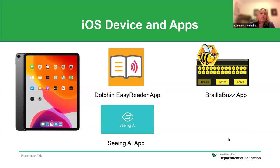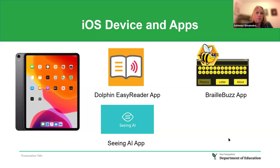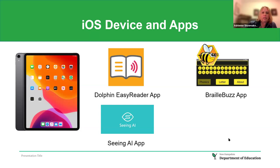iOS devices and apps are frequently used with our students. A few helpful apps: the Dolphin Easy Reader app for reading and accessing Bookshare books; the Braille Buzz app, available through APH; and the Seeing AI app, which can read short text, longer documents, and describe scenes, colors, and money. All three of these apps are free.